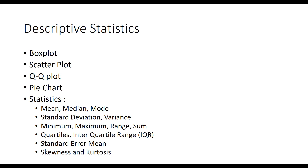The mode is the most frequent value appearing in our data set — it can be one value or there can be multiple modes. Standard deviation describes how close our values are to the mean: a higher standard deviation indicates values are dispersed over a wider range, while a lesser value means data points are close to the mean. The variance is the square of the standard deviation — so if my standard deviation is 7, the variance will be 49.